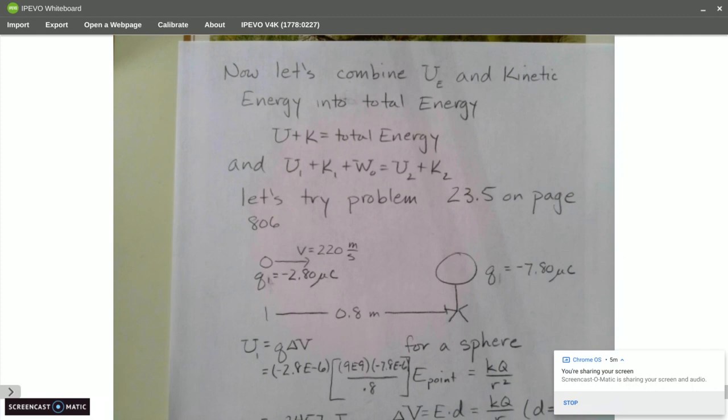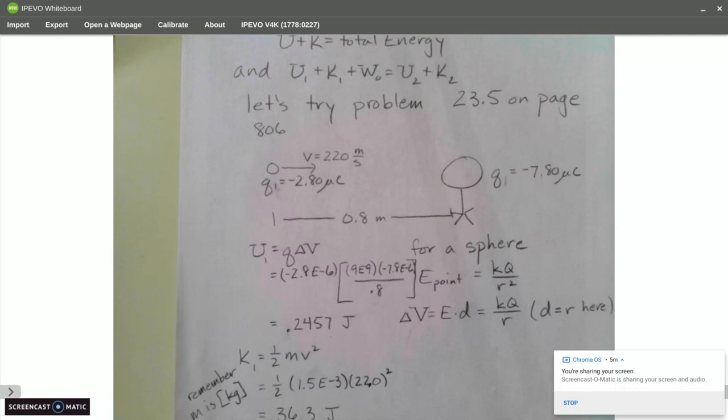So now, let's combine potential energy and kinetic energy into total energy. So if you remember, the potential plus kinetic is total energy. And I gave you the equation in first semester, U1 plus K1 plus work other is equal to U2 plus K2. Realize that 90, maybe 99% of the time, work other is going to equal zero here.